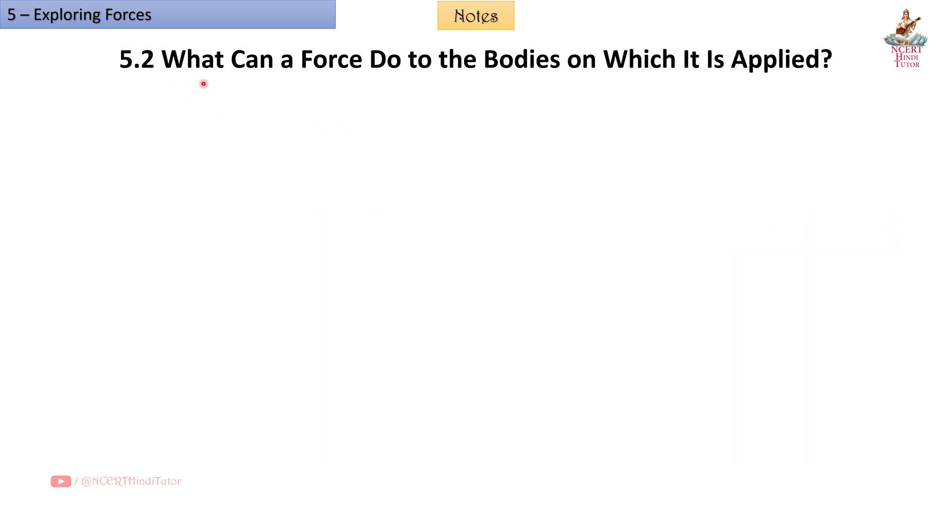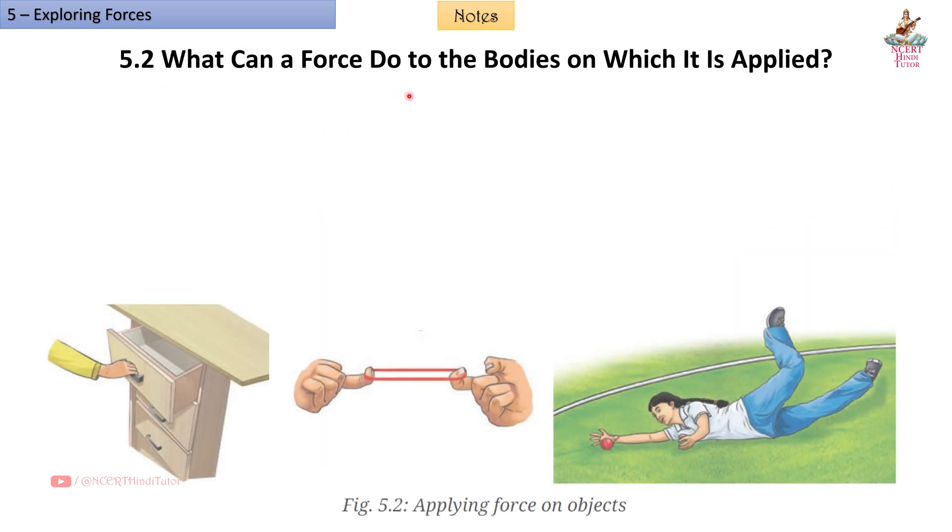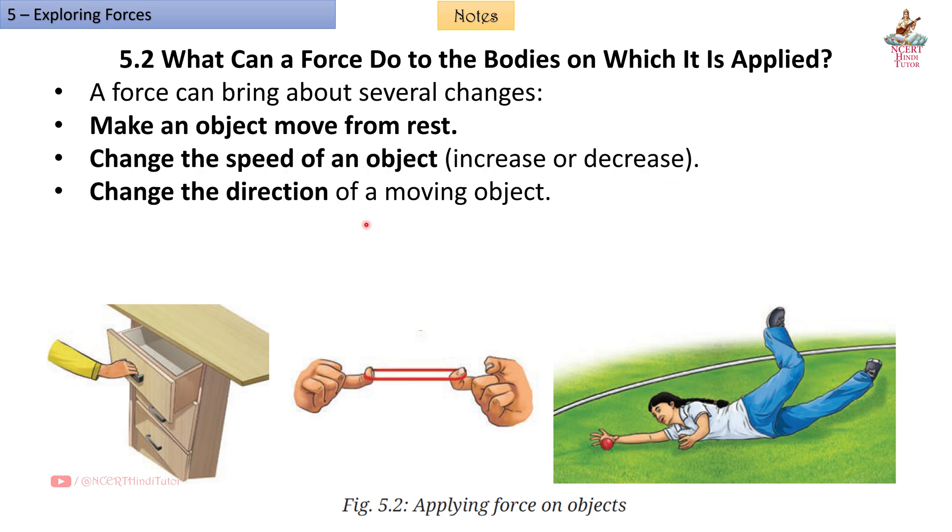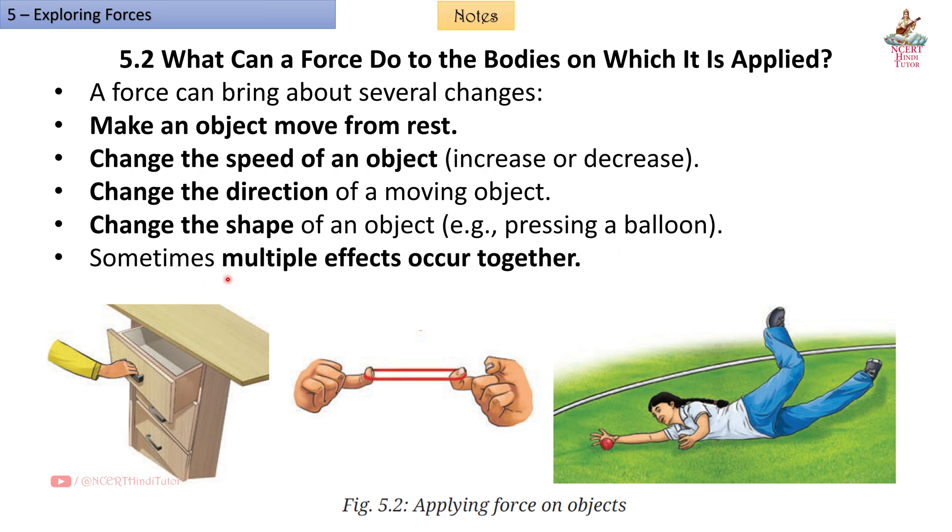5.2 What can a force do to the bodies on which it is applied? A force can bring about several changes: make an object move from rest, change the speed of an object (increase or decrease), change the direction of a moving object, change the shape of an object, e.g. pressing a balloon. Sometimes multiple effects occur together.